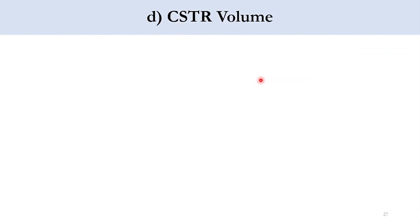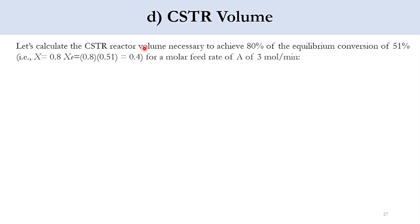Now moving to part number 4. Let's calculate the CSTR volume which is required to achieve 80% of equilibrium conversion of 51%. What does that mean? The equilibrium conversion is 51%. And if you remember our problem statement, it was said that 80% of the equilibrium conversion. So equilibrium conversion is 0.51, so 80% of that 0.51 is 0.4. So it means the value of x is 0.4. Molar feed rate is 3 mol per minute. So accordingly we are given this expression.